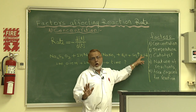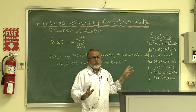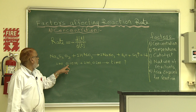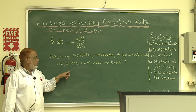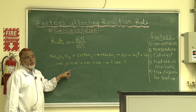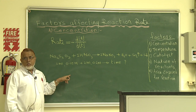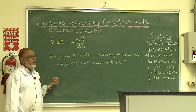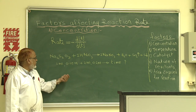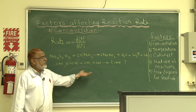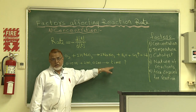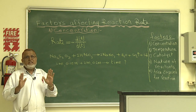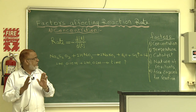Once the sulfur is completely formed, the reaction is complete and we record the time. We repeat the same experiment by changing the concentration of sodium thiosulfate from 0.05, then to 0.1, 0.2, 0.25, and 0.3, obtaining six readings. We then make a graph between the concentration of sodium thiosulfate and the time taken. Converting time to 1/t gives the rate of the reaction. This is the theory and principle of the experiment.